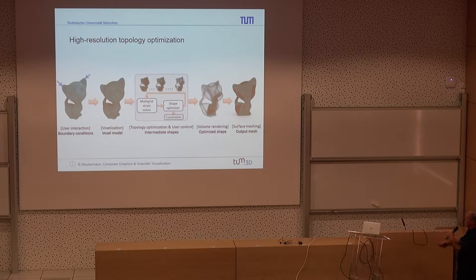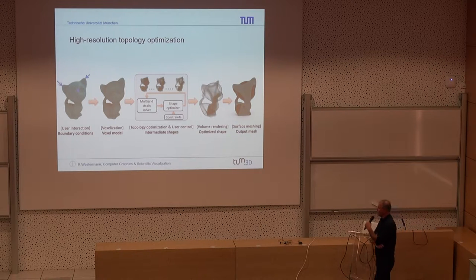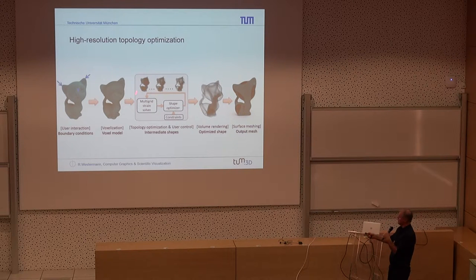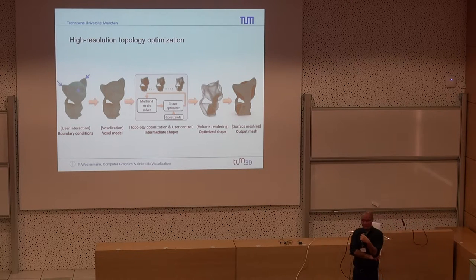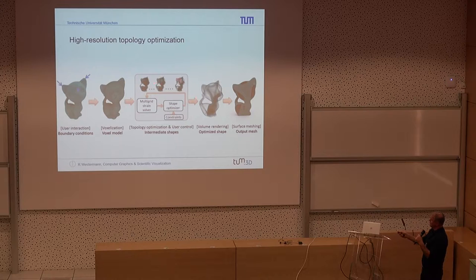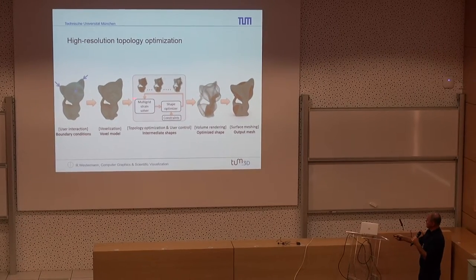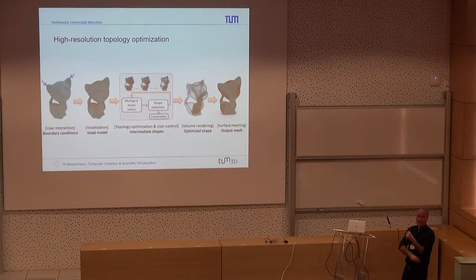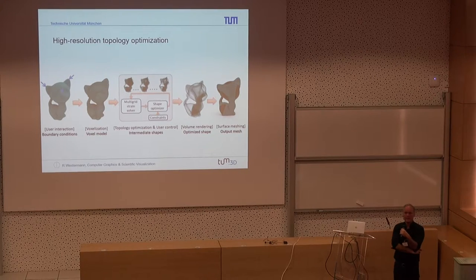The pipeline starts with a polygon model. The user specifies external forces indicated by blue arrows, then we voxelize the polygon model into millions of little voxels — hexahedral simulation elements used in the elasticity simulation. Then comes the core of the process: the multi-grid strain solver and shape optimizer including constraints, running for hundreds or thousands of iterations. At the end, the optimized topology is meshed into a final output surface and rendered using classical computer graphics techniques.